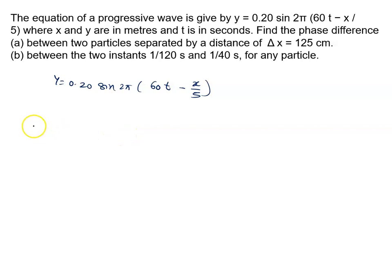Find the phase difference (a) between two particles separated by distance delta x equal to 125 centimeter, and (b) between the two instants of time.